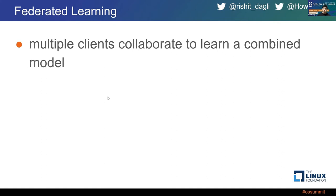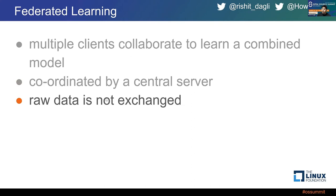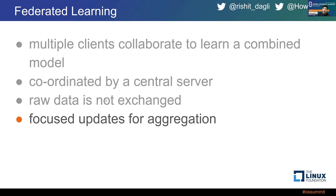Federated learning is the answer to all of these questions — including whether we can do training on device. In federated learning, multiple clients or edge devices collaborate to learn a combined model, coordinated by a central server. The key question is how to preserve privacy, because you don't want raw data to be shared. What happens is each device trains the initial model with its local data, and the updates from the initial model to the locally trained model are shared — not the raw data itself.